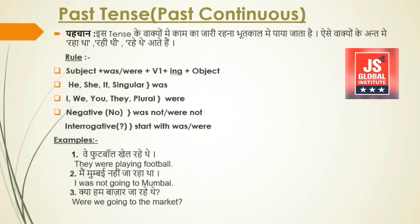So with 'he', 'she', 'it', or a singular subject — like a person's name such as Ram or Radha — we use 'was'. And with 'we', 'you', 'they', or any plural subject, we use 'were'. Let's have a look at the first example.